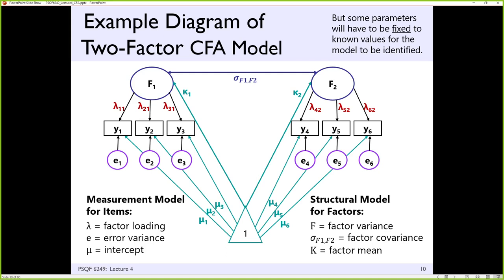These terms will show up periodically throughout the semester, particularly when testing invariance — whether items work the same way across groups. That concerns the measurement model parameters most importantly. If an item functions equivalently across groups, it should have the same intercept, the same factor loading, and the same residual variance across groups. Any differences between the groups would be relegated to the structural model — the factor level — instead.